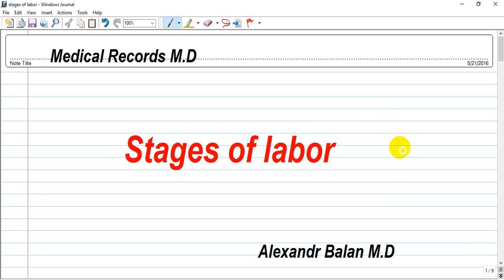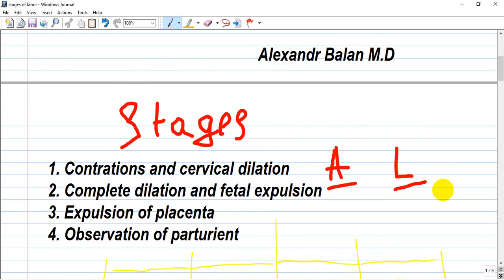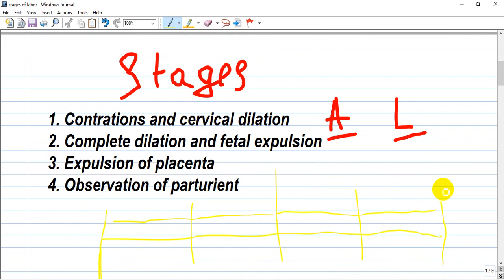Greetings everyone. Our subject today is stages of labor. There are four stages of labor. First is contractions and cervical dilation, which has two parts: latent and active. Second is complete dilation and fetal expulsion.